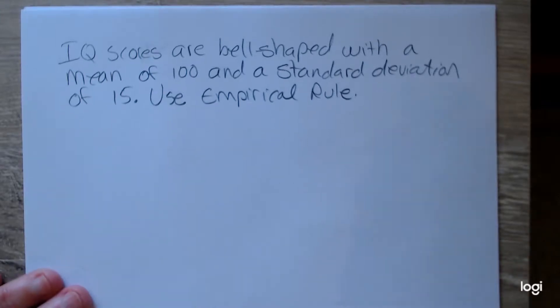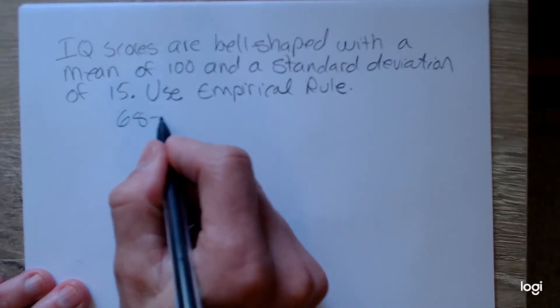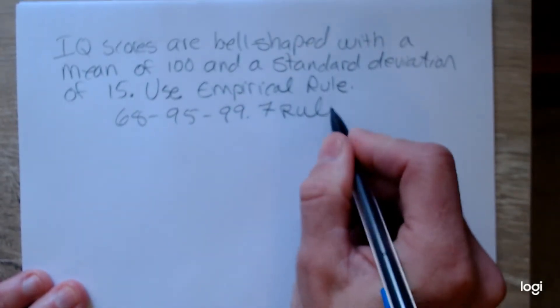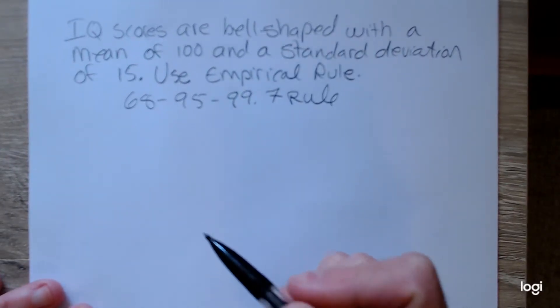So I'm going to use that empirical rule. The empirical rule is also called the 68-95-99.7 rule. And that's because it says, reading from the center out for bell-shaped data,